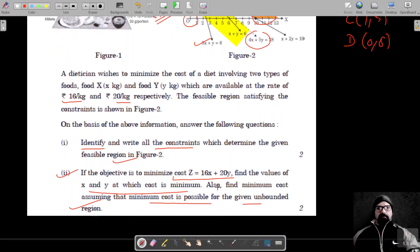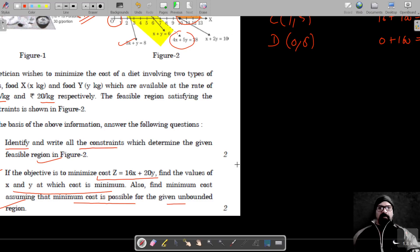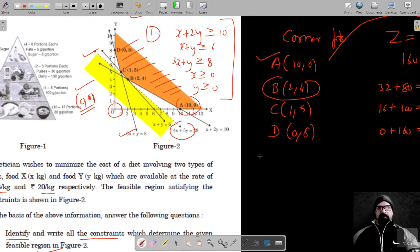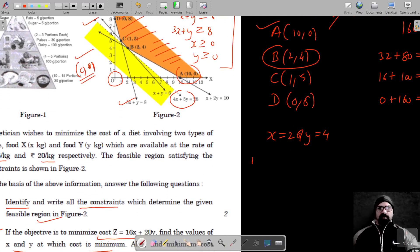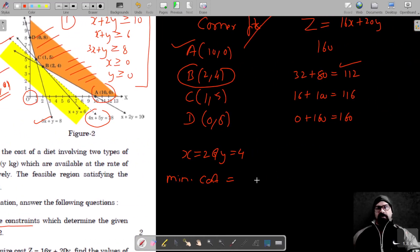The values at which the cost is minimum: x = 2 and y = 4. And minimum cost at these variables is Rs 112.